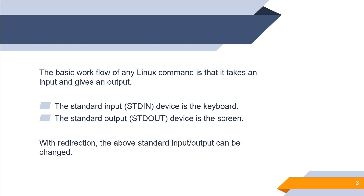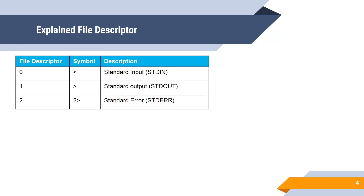With redirection, the standard input and output can be changed. Let's look at the file descriptor numbers and symbols we are going to use. File descriptor zero uses the symbol less-than (<) and represents standard input. File descriptor one uses the symbol greater-than (>) and represents standard output.